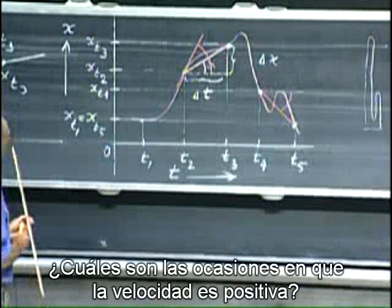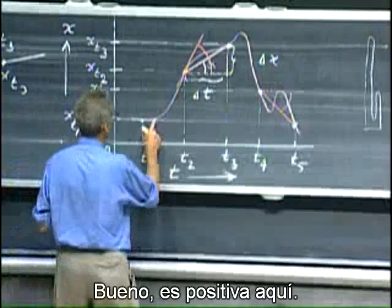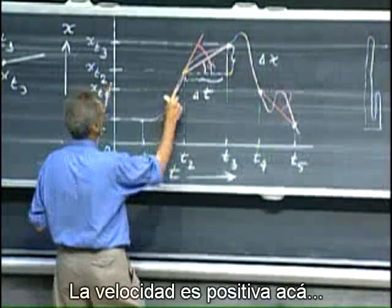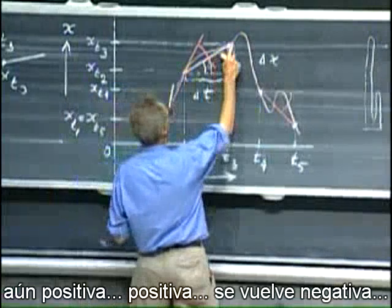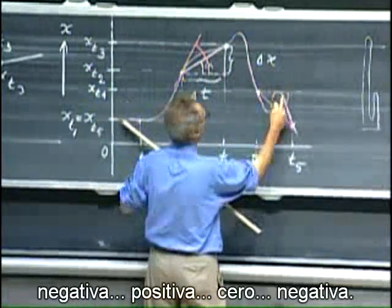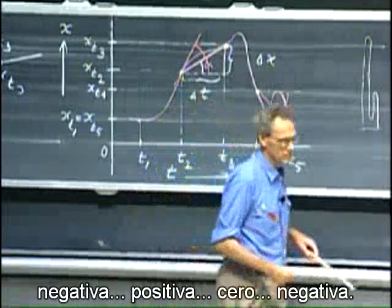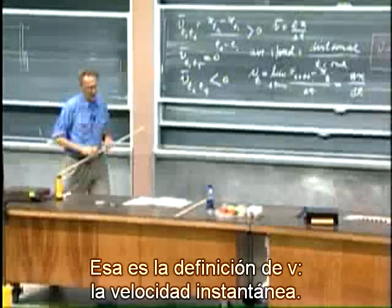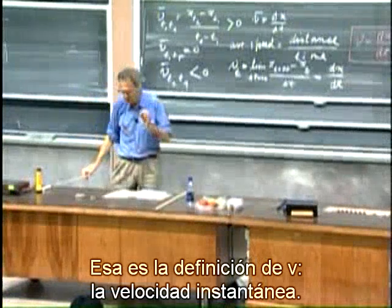What are the times that the velocity is positive? Well, it's positive here. Velocity is positive here. Still positive, positive. Becomes negative. Negative, positive, zero, negative. So that's the definition of v-instantaneous velocity.